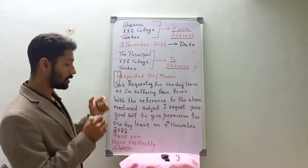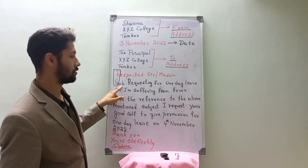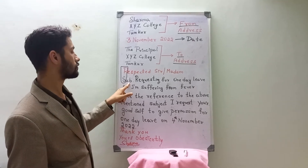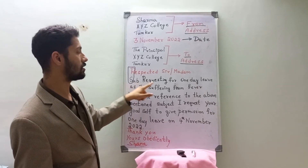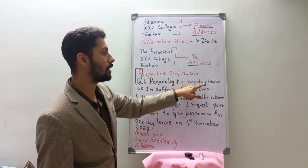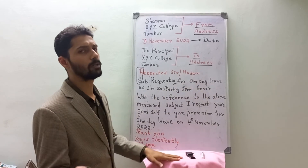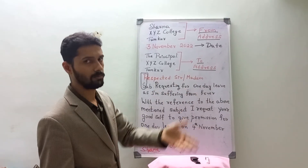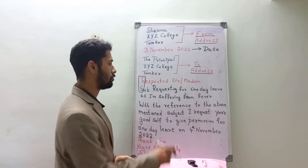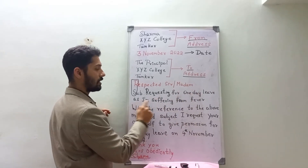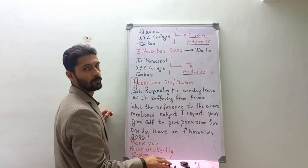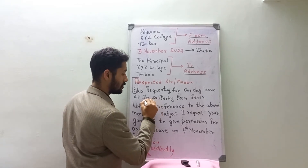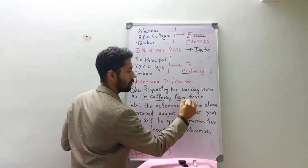For the subject, you should write 'Sub.' in short form only — don't write the full word 'subject.' The subject line reads: 'Requesting for one day leave.' If you want one day you can write one day, or two days, or three — however many days you need. You should mention a suitable reason, such as 'as I am suffering from fever.'